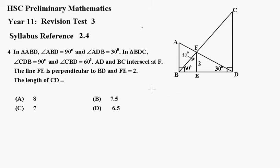So we're going to say that BE over 2 is going to be equal to the tan of 30. And we know the tan of 30 is 1 over root 3. So BE equals 2 times 1 over root 3, which is 2 over root 3. And we'll rationalize that. And we get 2 root 3 over 3.